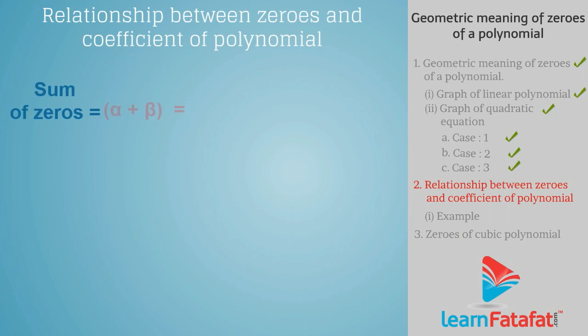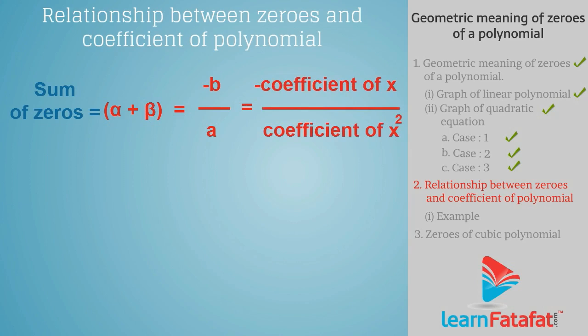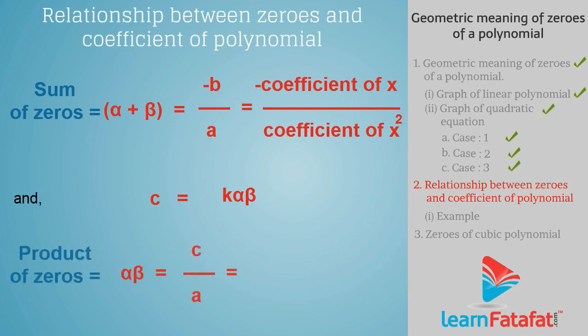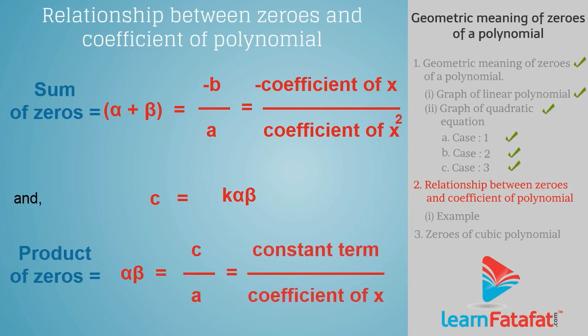Sum of zeros = alpha + beta = -b/a, which is equal to minus the coefficient of x divided by the coefficient of x². Also, product of zeros = alpha·beta = c/a, which is equal to the constant term divided by the coefficient of x².